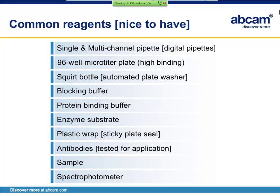Of course, you'll need blocking buffer, protein binding buffer, and enzyme substrate if you are using an enzyme-conjugated secondary antibody. It's important to cover your plates to prevent evaporation during incubations. Plastic wrap can be used, but it may be more convenient to use plastic covers or adhesive plastic seals. Of course, you'll need antibodies that ideally have been tested to function in ELISA. And lastly, you'll need sample and a spectrophotometer to read your data.